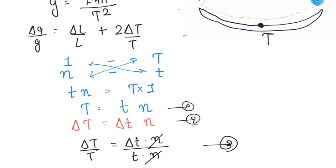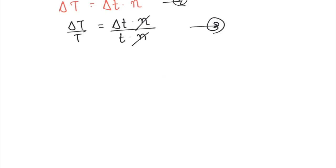Now let us take our equation: delta G by G equals delta T by T, which is now delta small t by T as I have proved in equation 3, plus 2 times delta L by L.